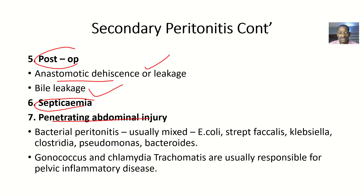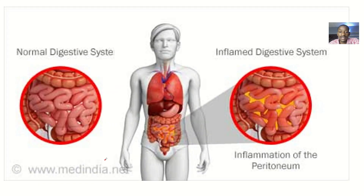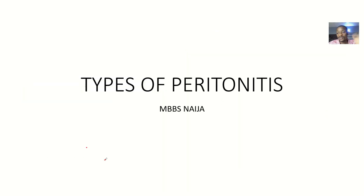In secondary peritonitis, the bacterial infection is usually mixed. Organisms include E. coli, Streptococcus fecalis, Klebsiella, Clostridia, Pseudomonas, Bacteroides, Gonococcus, and Chlamydia trachomatis. The latter organisms are usually responsible for Pelvic Inflammatory Disease, and all of these can be associated with types of peritonitis.